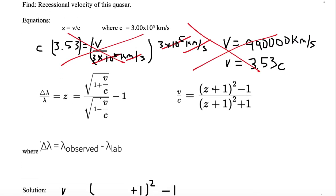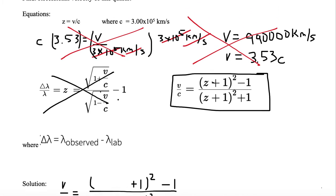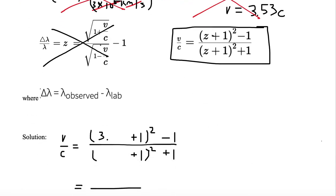So let's find another equation. We want to find the recessional velocity. So we're looking for recessional velocity. These equations on the left are z equals, whereas these equations on the right are v equals. So we don't want to use the equations on the left. We want to use the v over c equations on the right. So I've already set it up for us. We've got v over c is equal to parentheses z plus 1 close parentheses squared minus 1 divided by open parentheses z plus 1 close parentheses squared plus 1. So I need to put my z value in there. Our z is 3.53. So you want to put a 3.53 on the top and a 3.53 on the bottom in the place of where z is supposed to be.